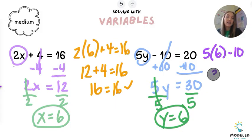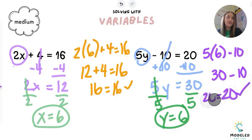Well, 5 times 6—because the order of operations says we multiply first—5 times 6 is 30. Subtract 10, and what do you get? You get 20. 20 equals 20.